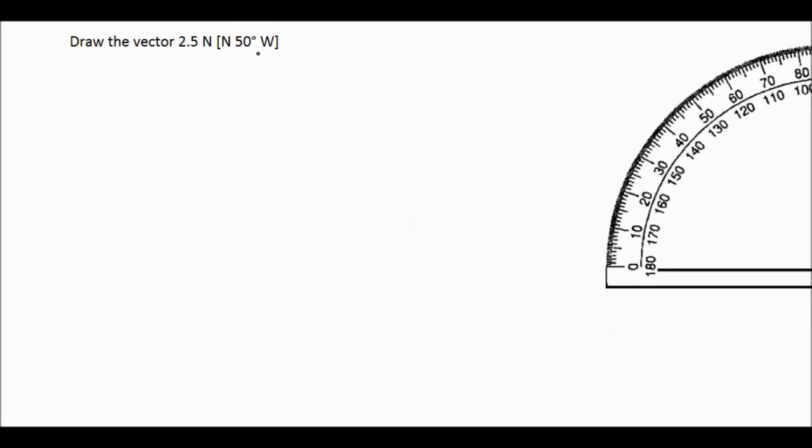The first thing is use a pencil because you're going to make mistakes. The second thing is just get a general idea of the direction of the arrow. This is going to point northwest, which means it will start right around here maybe, and it will go northwest somewhere in this direction. We don't know exactly yet.